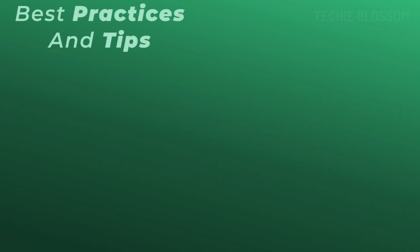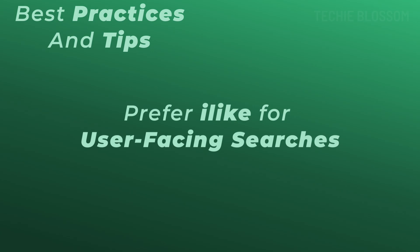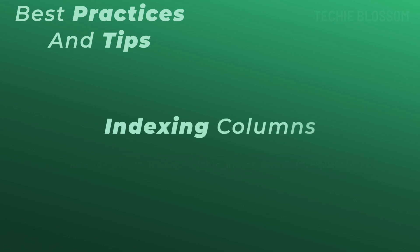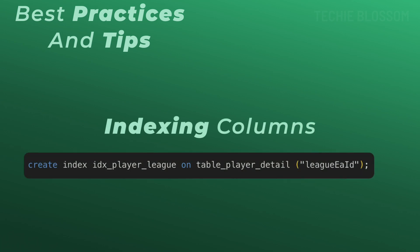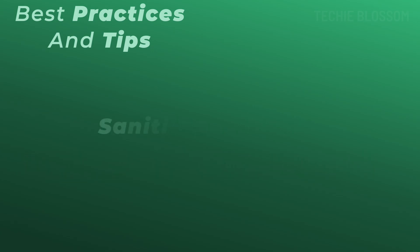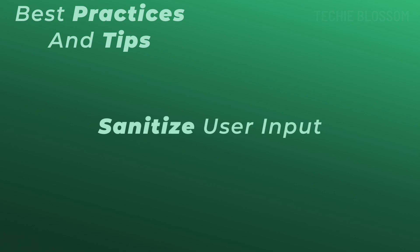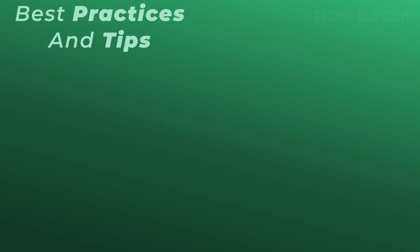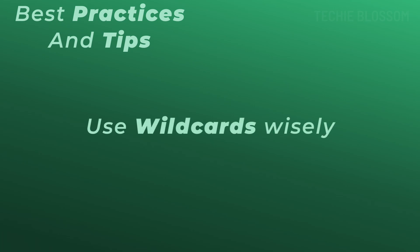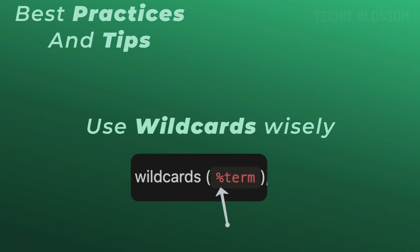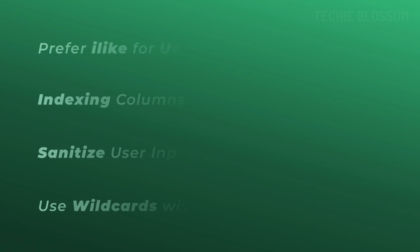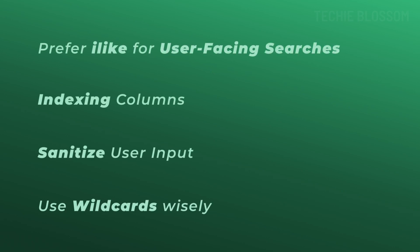Before we wrap up, here are some tips for using like and ilike effectively. Prefer ilike for user-facing searches — use ilike for case-insensitive searches to improve user experience. Index frequently queried columns: if you are searching large datasets, index columns like name or email to optimize query speed. Sanitize your user input — always sanitize input to prevent SQL injection, even though Supabase handles this for you. Use wildcards wisely: avoid excessive use of leading wildcards like %term, as they can slow down performance. By following these steps, you can build fast and reliable search features.